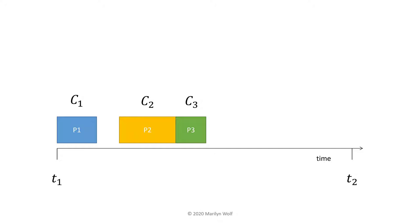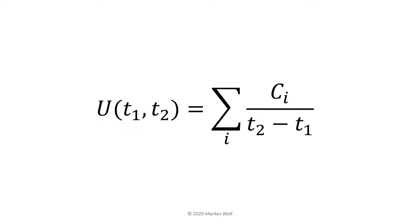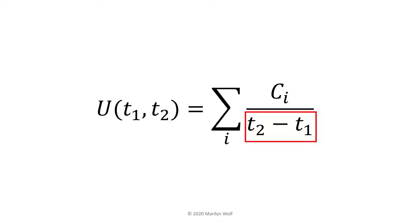We'd like metrics to help us evaluate the quality of a schedule. Here's a simple example with several different processes, their computation times, and we'll consider how they execute over a time interval from T1 to T2. A very simple but effective metric is utilization. For each task I, we find the computation time for the ith task and divide it by the length of that time interval. We then add up all these contributions to find the total utilization, which gives us a number between 0 and 1, often expressed as a percentage. Clearly, we cannot use more than 100% of the CPU.